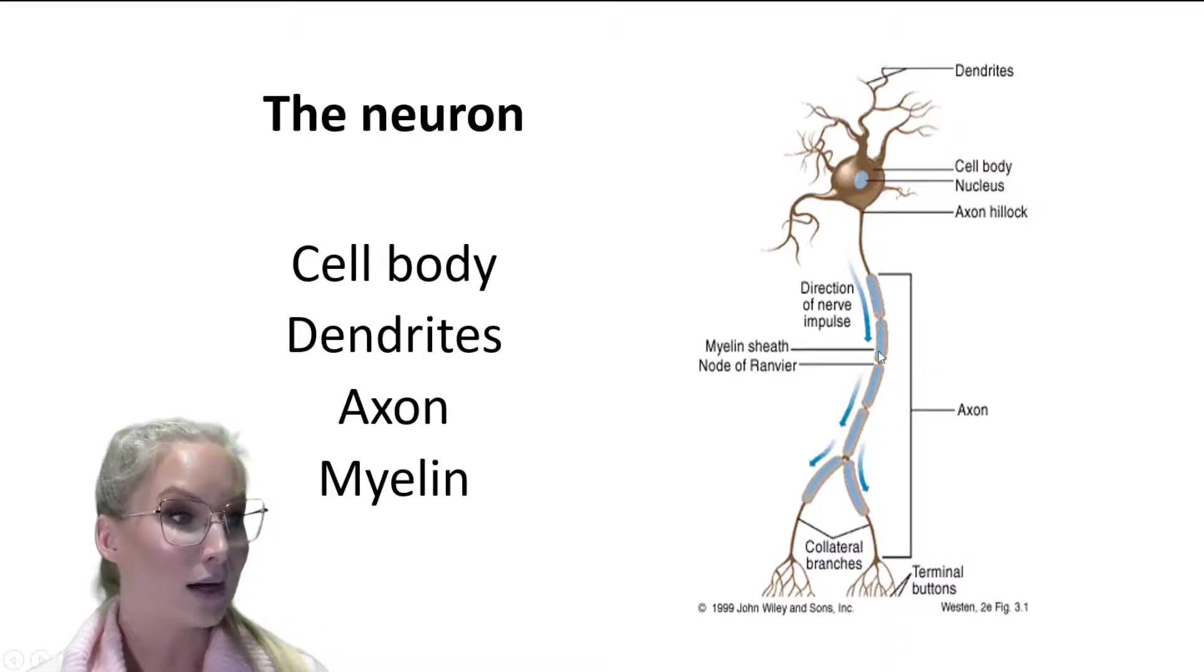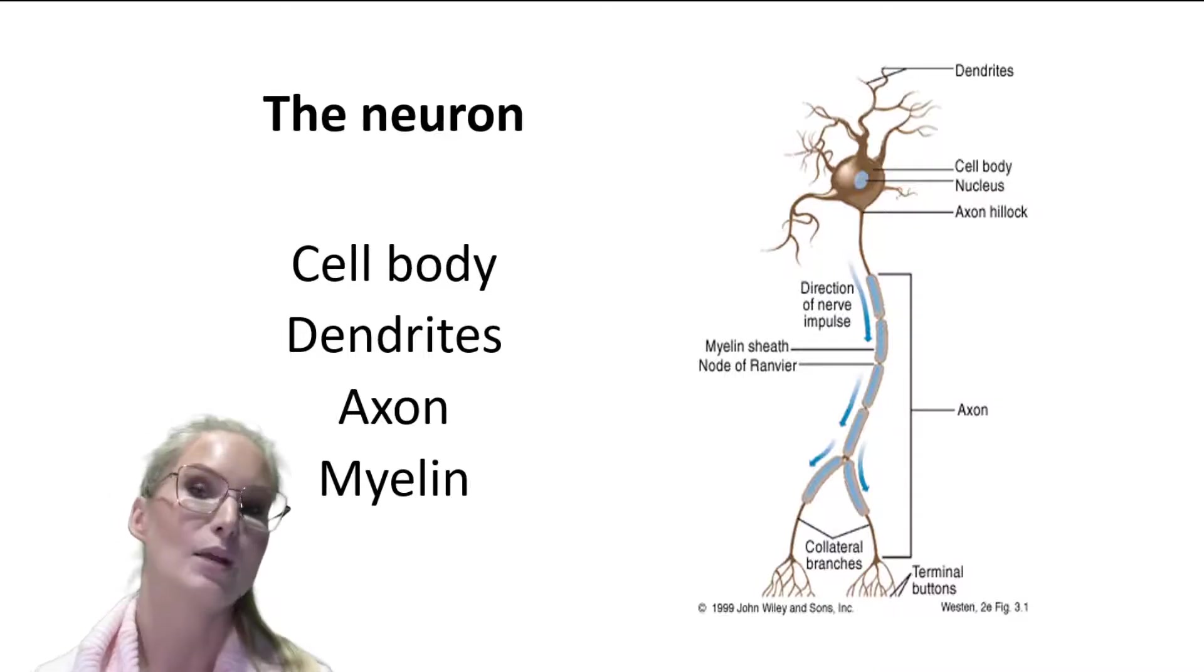So this myelin, this fatty myelin sheath, is actually insulating this axon. And that's allowing the axon to be able to transmit that signal, that action potential, faster and more effectively.